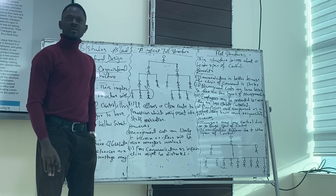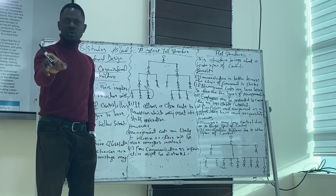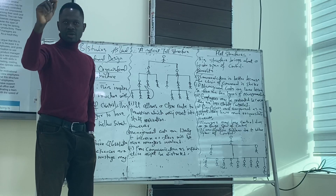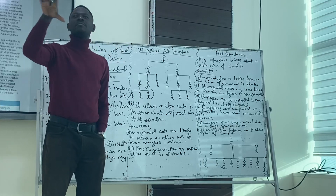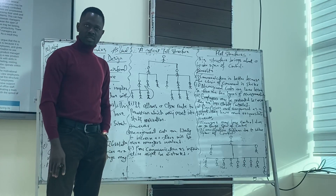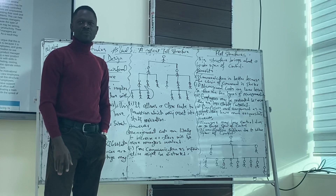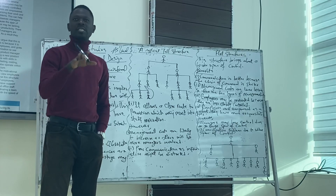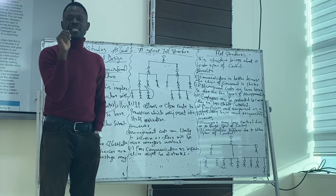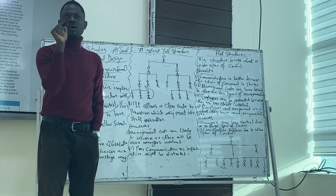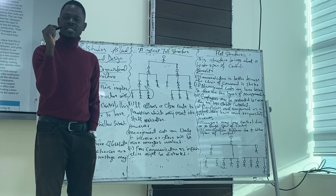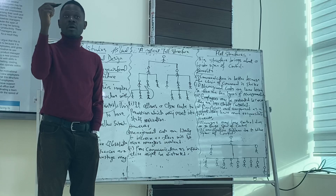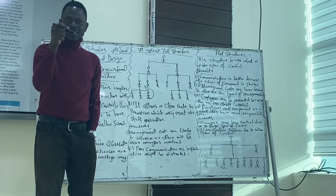What's the difference between this and the wider span of control? For a wider span of control, you have one manager with more subordinates — that's why it is called the wider span of control. The difference is that in the wider span of control you have more subordinates than managers, but in the tall structure you have more managers than subordinates.